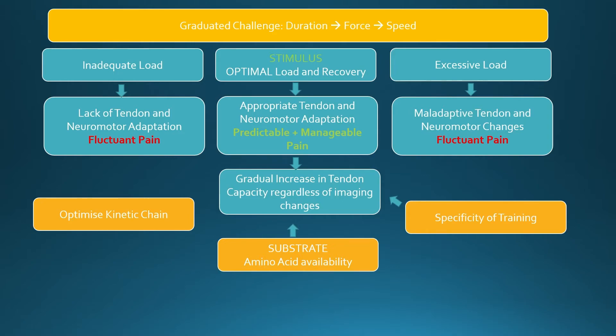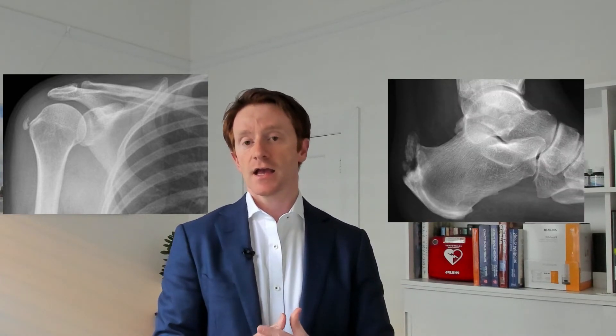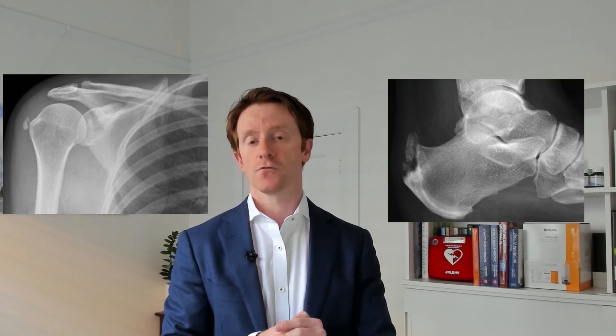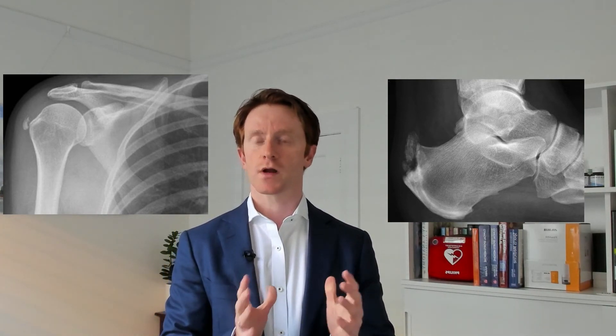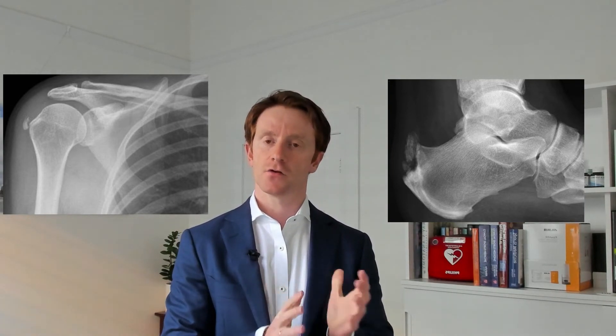Calcific tendinopathies are one such example. Calcific tendinopathy is thought to represent a healing response from degenerative tendons with a powerful neurovascular ingrowth. These forms of tendinopathy can affect the rotator cuff and the achilles, and may respond to various adjunctive treatments for pain — but this is just one example of cases of tendinopathy that are not straightforward.